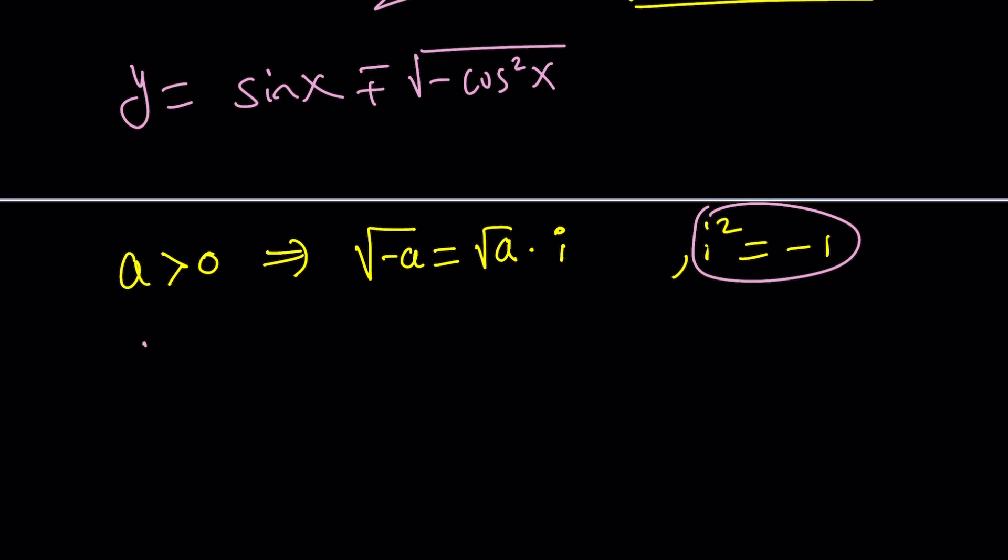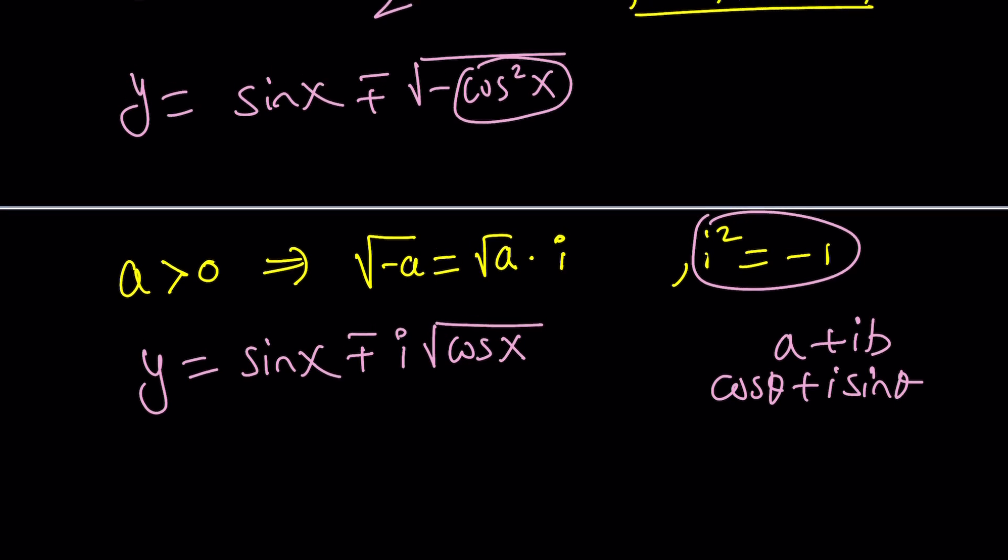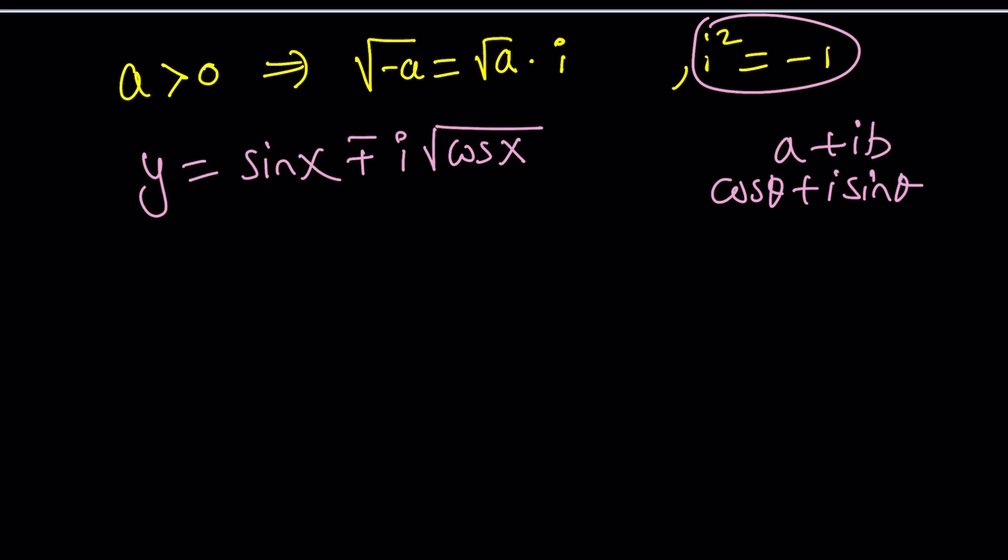And I'm pretty sure at some point you're going to see complex numbers. So now, based on this, we can write our value as follows. Y equals sine X plus minus, the square root of cosine squared is going to be cosine X with the plus minus sign, but we already have that, but there's going to be an I, so let me go ahead and write it this way. This is how most books, textbooks will write complex numbers. Instead of A plus BI, they're going to write it as A plus IB, because that kind of conforms to the trigonometric form, which is cosine theta plus I sine theta.